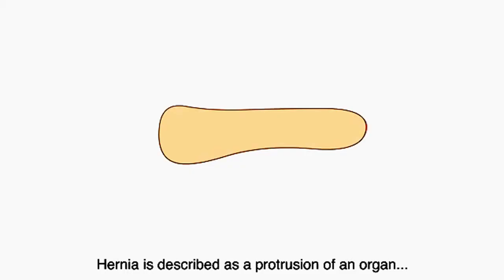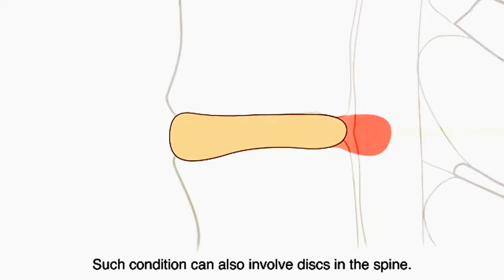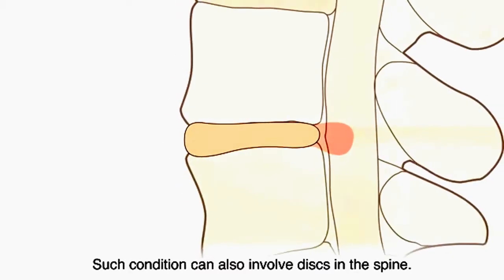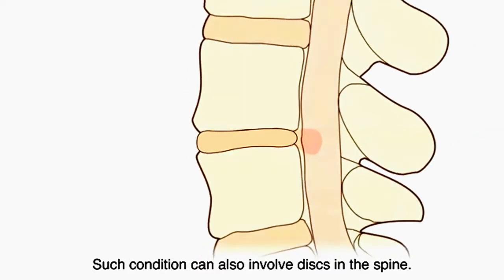Hernia is described as a protrusion of an organ beyond the cavity which normally contains it. Such condition can also involve discs in the spine.